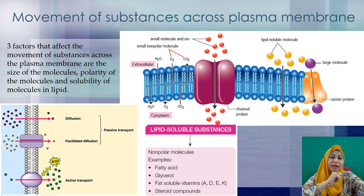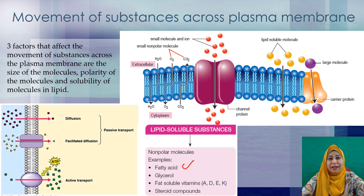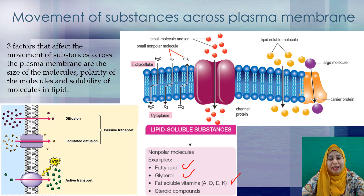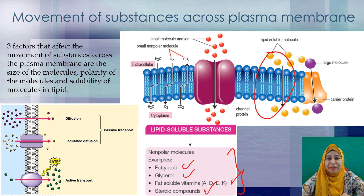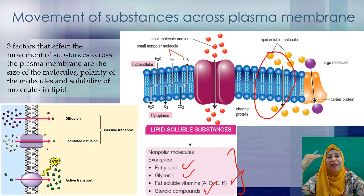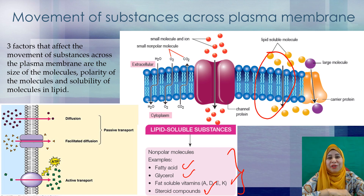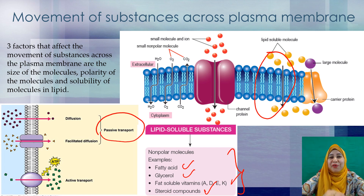Now we look at lipid soluble substances. Examples of lipid soluble substances are fatty acid, glycerol, vitamins A, D, E and K, and steroid compounds. Since all these molecules are lipid soluble substances, they can easily pass through the phospholipid bilayer via simple diffusion — meaning from higher concentration of solute to the lower concentration of solute — and that is under passive transport.